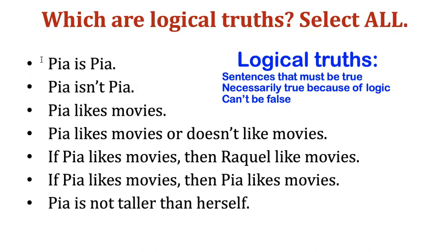Let's take the first sentence: 'Pia is Pia.' This is a logical truth because every object has to be the same as itself — that's what the word 'is' means. Or to put it another way, if we say Pia equals Pia, it's a fact about the logic of the identity relation: everything is identical to itself. That's why that sentence can't be false, and why any sentence like that is a law of logic.